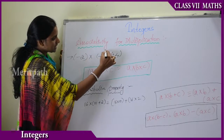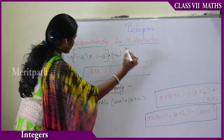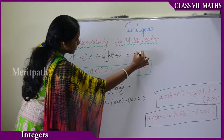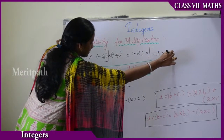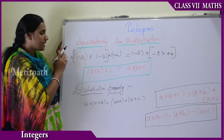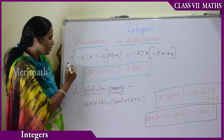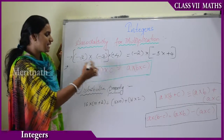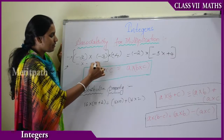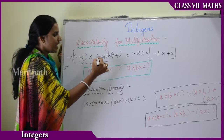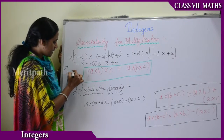We write: (minus 2 into minus 3) into plus 4 equals minus 2 into (minus 3 into plus 4). Now on the LHS, minus 2 into minus 3 — since minus into minus gives plus — that is plus 6. And plus 6 into plus 4 equals plus 24.